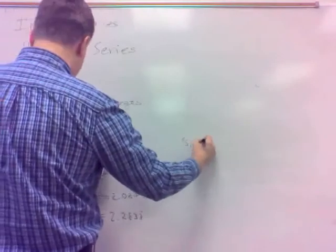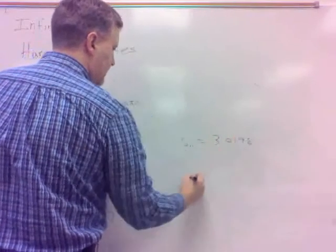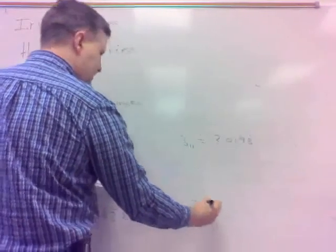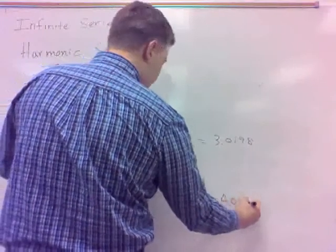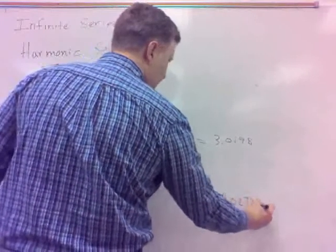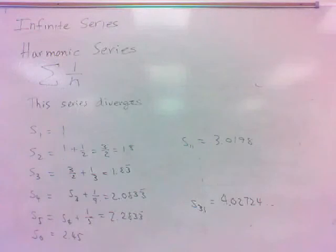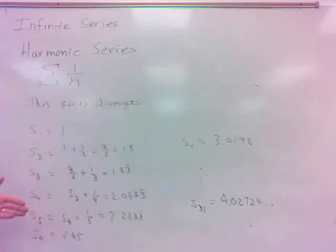Skipping ahead — S11 is 3.0198, and S31 is 4.0272. These partial sums, they're not going to any particular number, are they? They just keep going upwards and upwards.